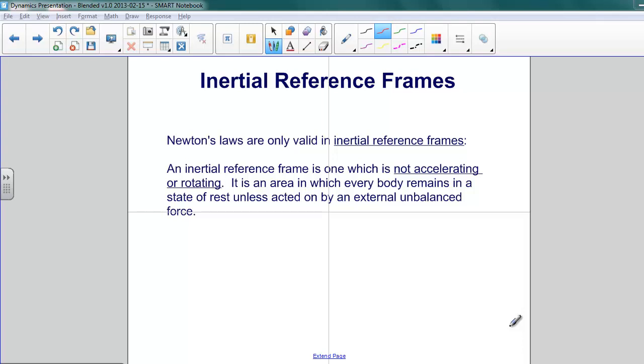So examples of inertial reference frames would be the inside of a bus or a train moving at a constant speed and in a straight line. When you're inside one of those objects traveling at a constant speed, everything that you experience, the way things appear to move to you, is exactly as they would do if you were standing on the earth itself.